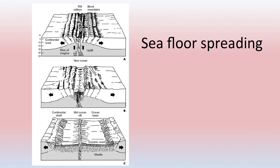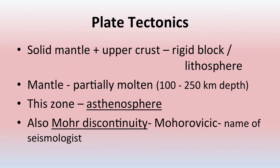The example of sea floor spreading can be seen in figures showing magma coming out gradually and the sea floor spreading, with new layers forming along this zone. Regarding plate tectonics — the solid mantle and upper crust form the lithosphere or rigid block on the earth surface. Magma is partially molten and the upper solid block is floating above it. This molten magma zone is known as the asthenosphere, which is 100 to 250 kilometers in depth, also known as the Moho discontinuity, named after seismologist Mohorovic.